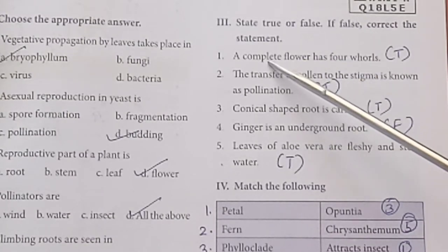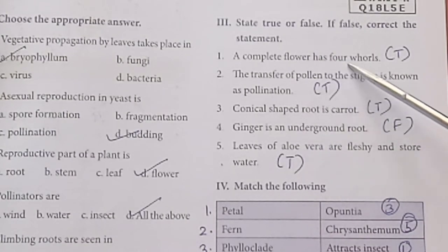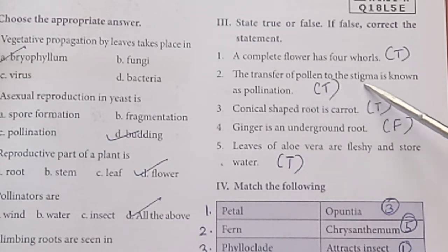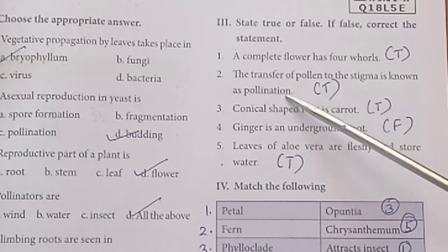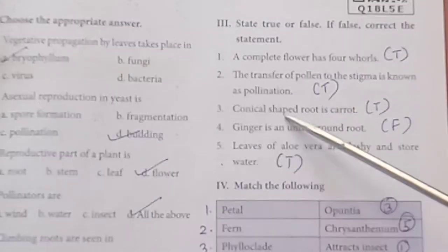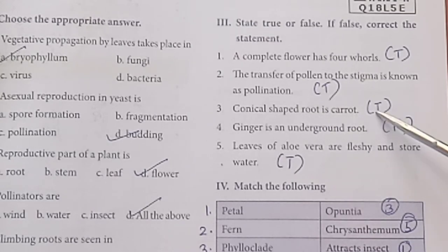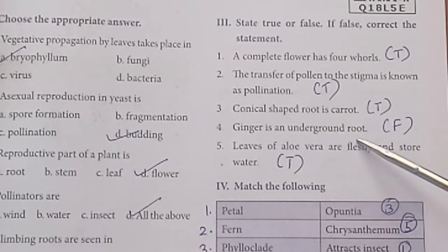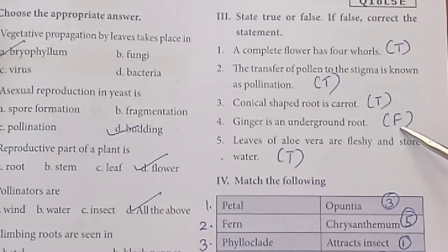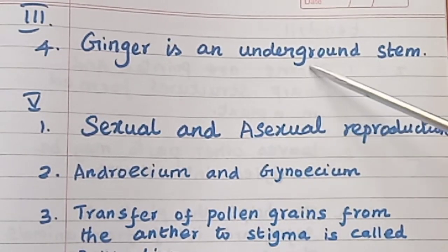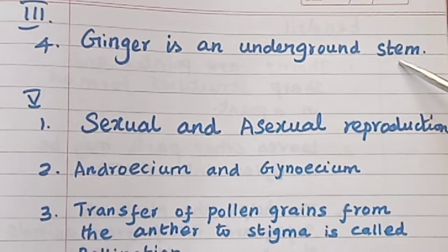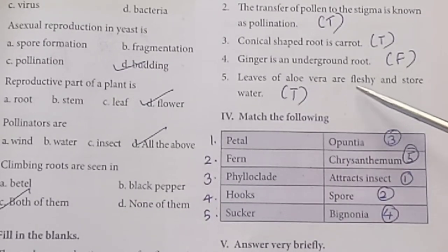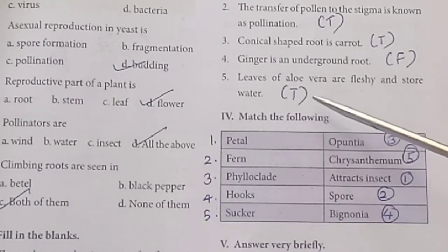State true or false. A complete flower has four whorls — True. The transfer of pollen to the stigma is known as pollination — True. Conical-shaped root is carrot — True. Ginger is an underground root — False. Ginger is an underground stem. Leaves of Aloe vera are fleshy and store water — True.